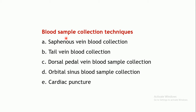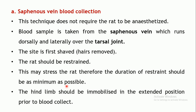Coming to the actual techniques of blood sample collection, there are five different methods: first, saphenous vein blood collection; second, tail vein blood collection; third, dorsal pedal vein blood sample collection; fourth, orbital sinus blood sample collection; and fifth, cardiac puncture. The names also indicate the vein or site from which the blood is collected.